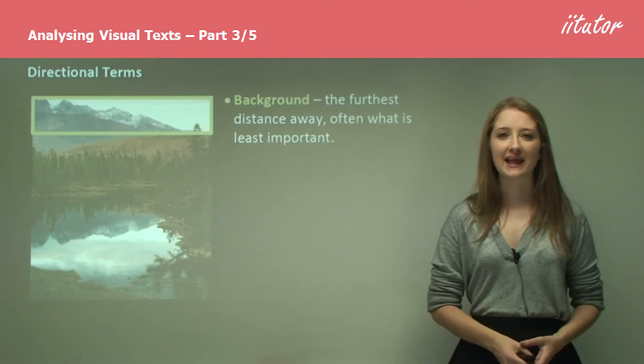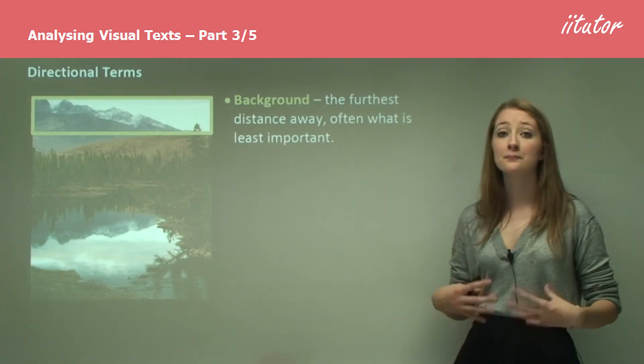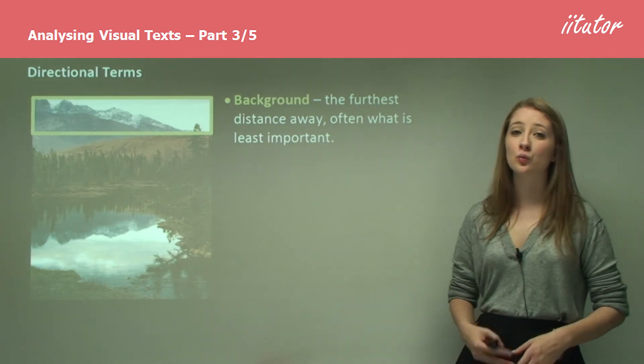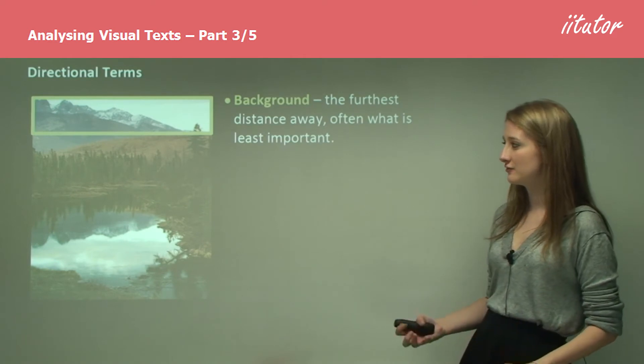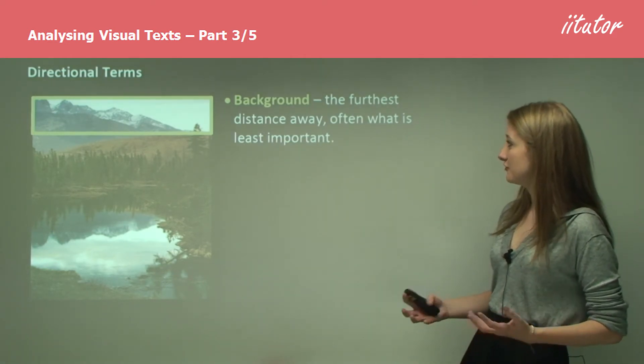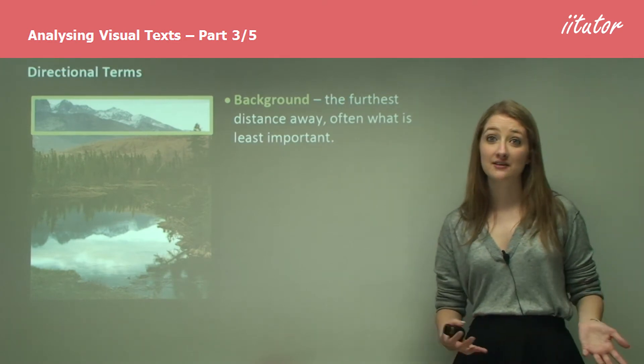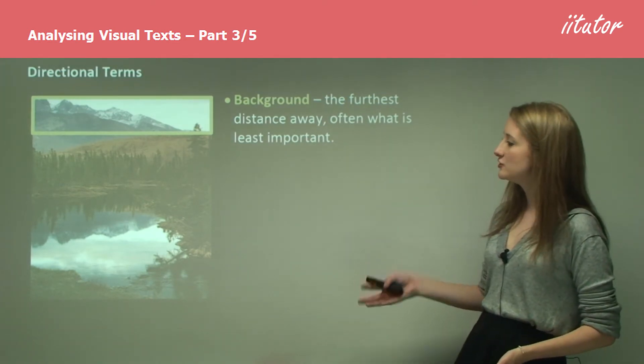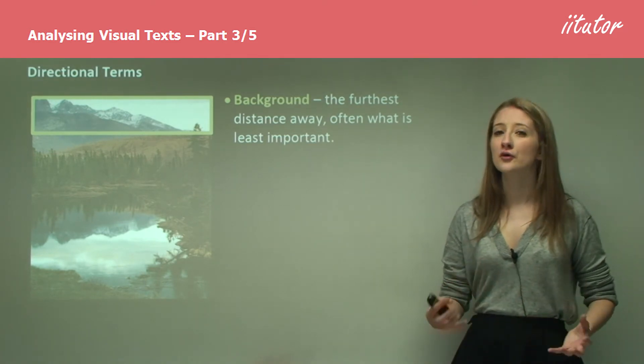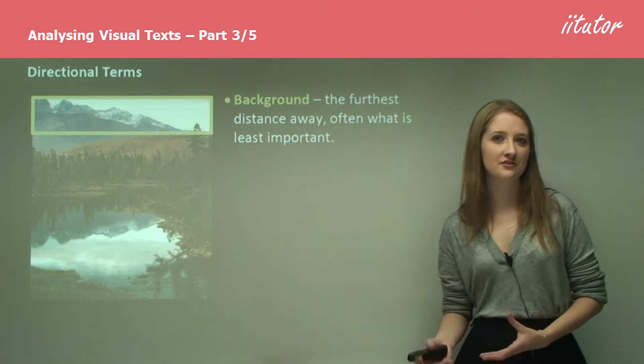Directional terms also relate to the idea of background, foreground and middle ground. This is in relation to what part of the image you're directing the reader towards. The background is the furthest distance away and often what's least important. In this image, the mountains in the background are nice to look at but they're not the focus of the image. It's not what the image is there to show you.